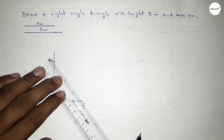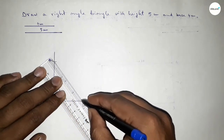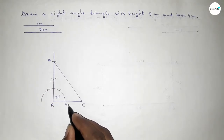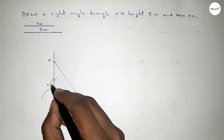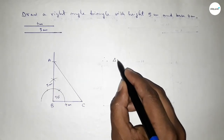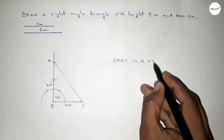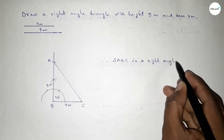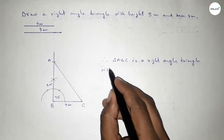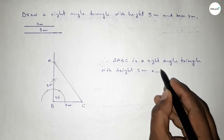Now joining A and C to get the triangle. This side is 4 centimeter and this side is 5 centimeter. Therefore triangle ABC is a right angle triangle with height 5 centimeter and base 4 centimeter.